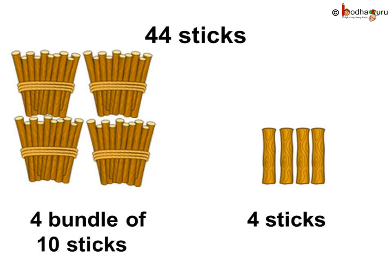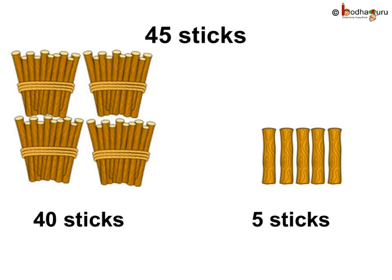Thus 44 sticks means 4 bundles of 10 sticks — that is 40 and 4 sticks. Similarly, 40 and 5 is 40, 41, 42, 43, 44, 45. It is 45 sticks.